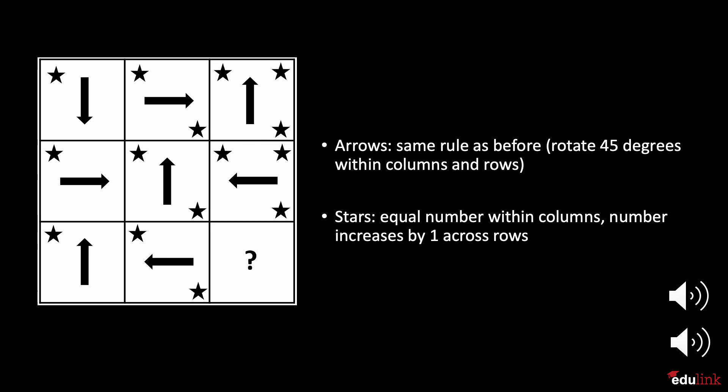As before, they rotate 45 degrees counterclockwise within the rows from left to right, and the columns from top to bottom. Next, let's look at the stars. The number of stars remains the same within the columns from top to bottom, and increases by 1 along the rows, going from 1 to 2 to 3 as we move from left to right.